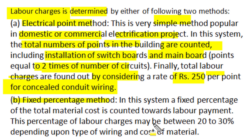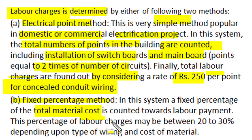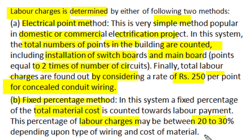In this system, we first count the total material cost involved in the project by counting the quantity and rates of those items. Then labor charges may be considered as 20 to 30 percent of the total cost of wiring material. So labor cost is treated as a percentage part of material cost, and roughly it is taken as 20 to 30 percent depending upon the type of project.